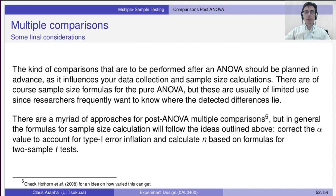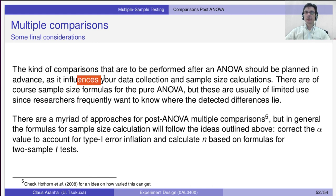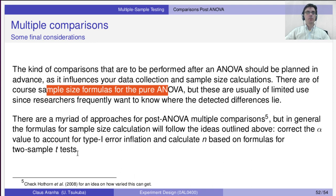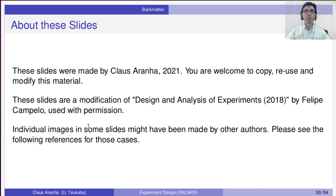Some final considerations on multiple comparisons: the kinds of comparisons done after ANOVA must be planned in advance, as this influences data collection and sample size calculations. There are sample size formulas for ANOVA, but they are general, and sometimes you need something more specific. That was the summary of how to use ANOVA for multiple comparisons. I hope you enjoyed this — have a nice weekend.